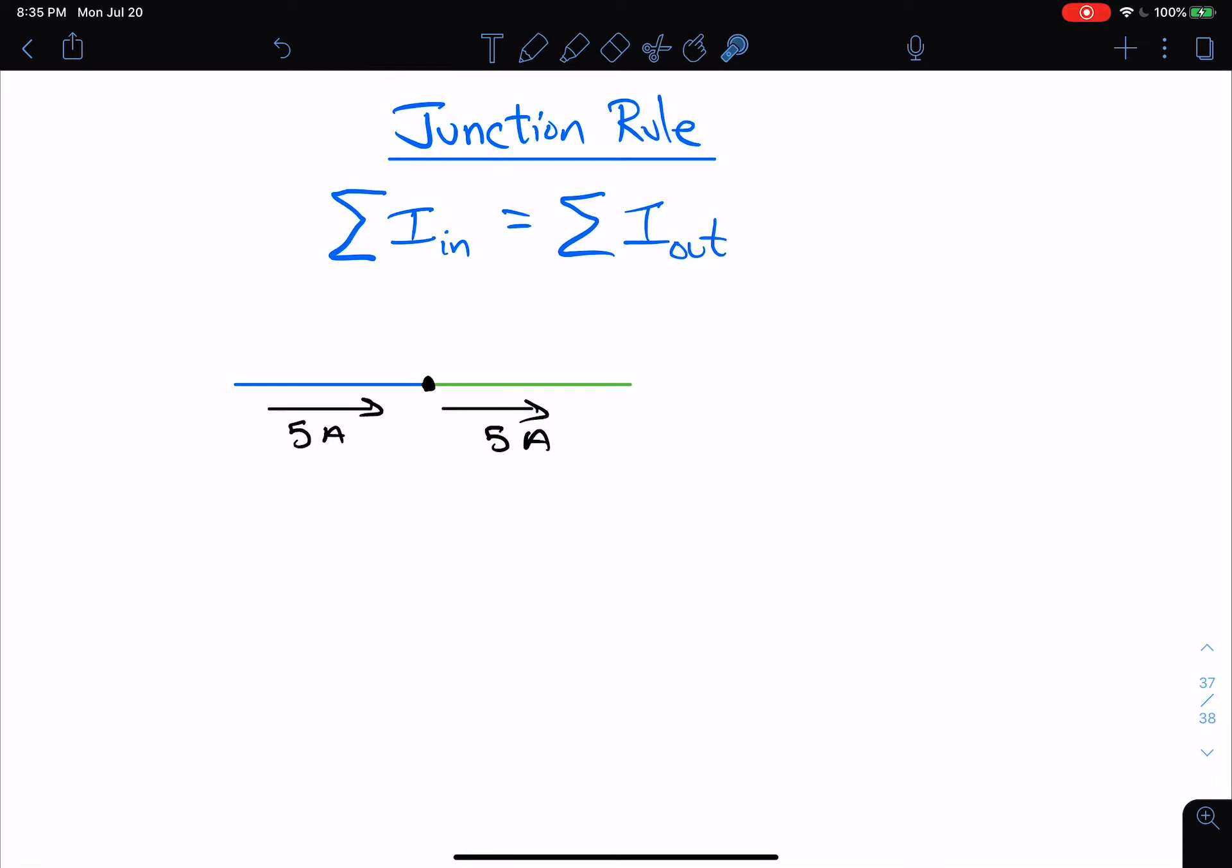So this basically says that along a wire or along a single path, I should say, the current is the same all throughout it.